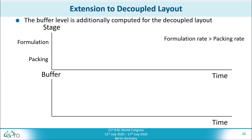Furthermore, the buffer level has to be computed for the decoupled layout. This is demonstrated with an example where the formulation rate of an order is larger than its packing rate. Suppose that at some point we want to start a formulation operation. This means that the formulation stage starts feeding intermediate products into the buffer and the buffer level increases. Now, before the end of the formulation stage, we start a packing operation.